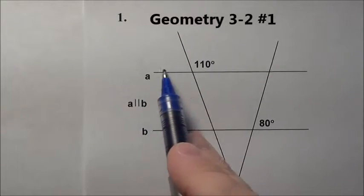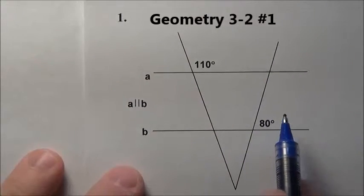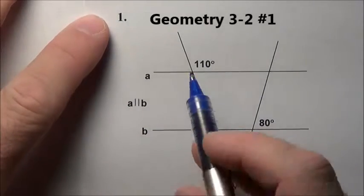Here's problem one. We have A and B are parallel, so these are parallel. So we want to find every angle around it. Well, let's start with this.